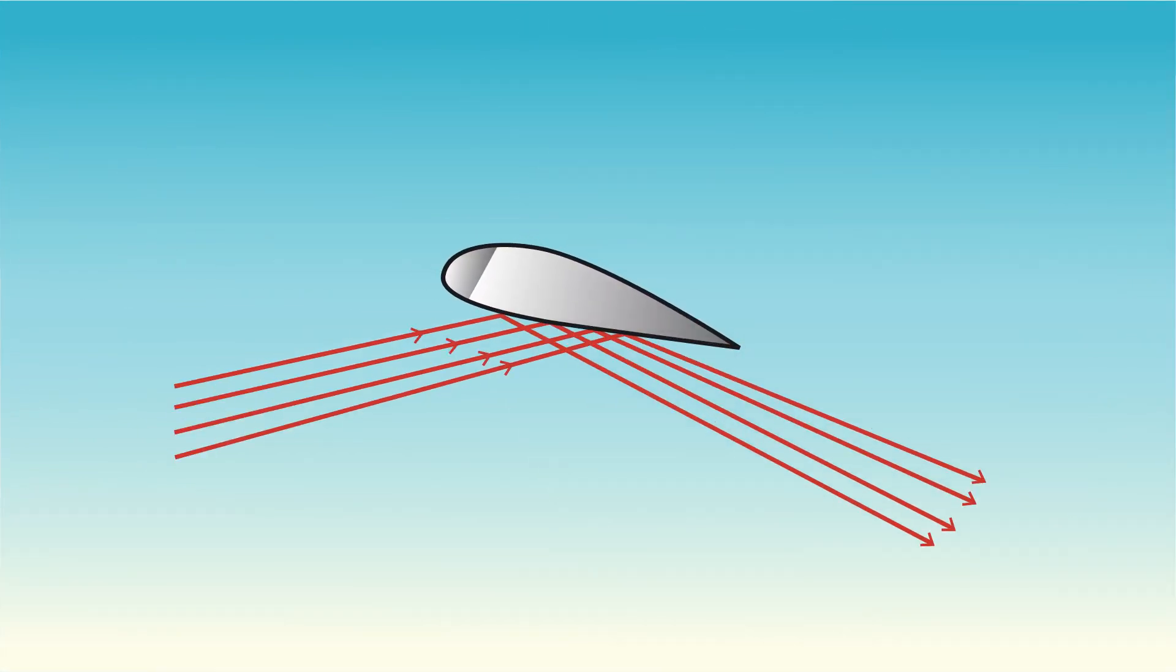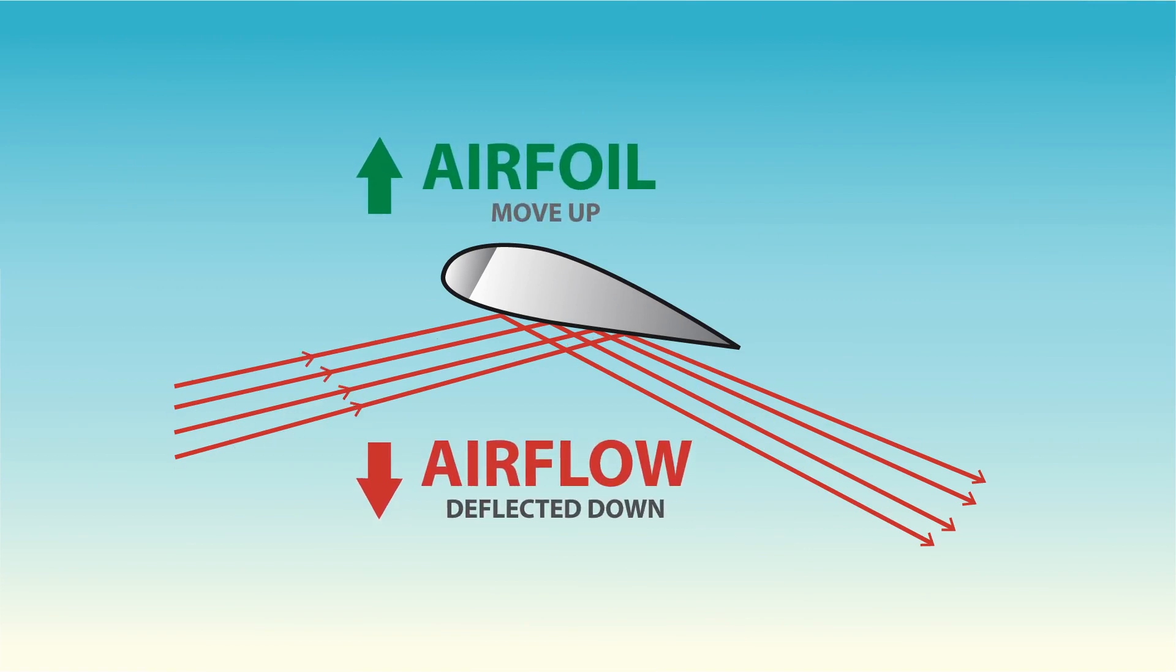In addition, because part of the air passing under the wing deflects downward, the opposite reaction of the downward moving air means pushing the wing upward, producing a small amount of lift.